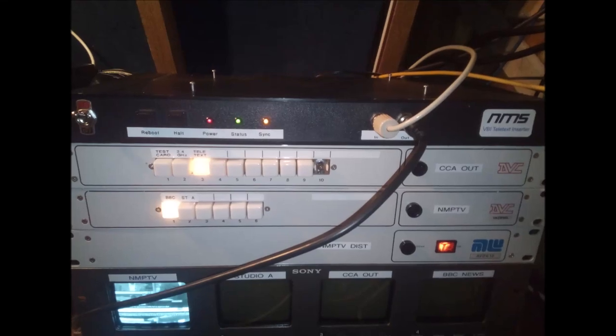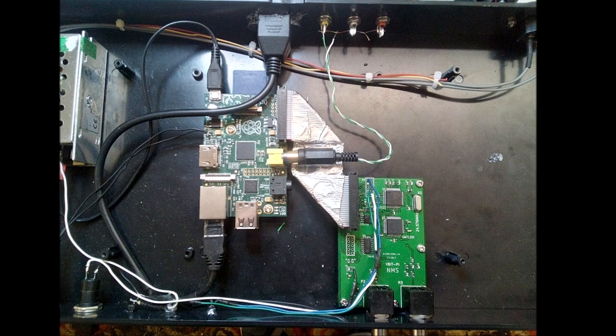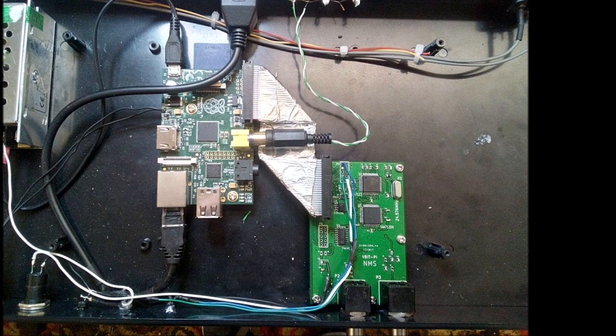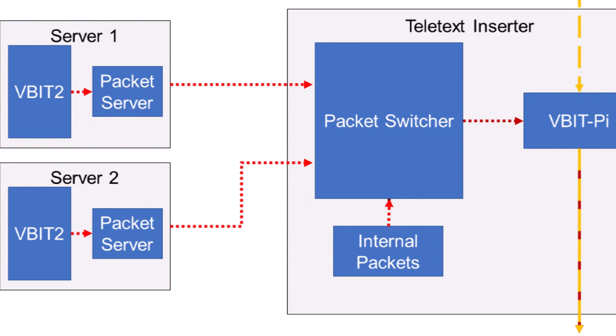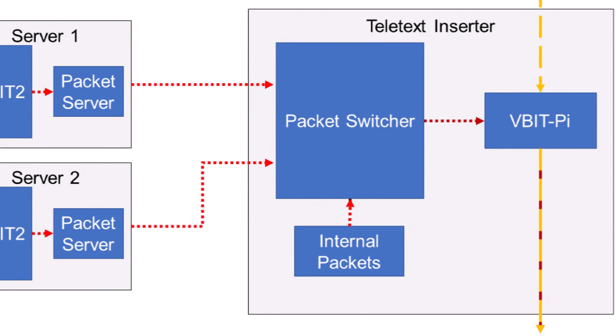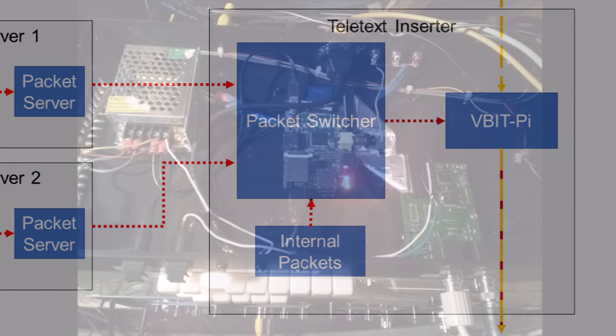This is my home-built Teletext Inserter. It uses a Raspberry Pi connected to a VBitPi board to add a Teletext data stream to pretty much any video signal. Two other Raspberry Pis used as servers provide the Inserter with a data stream. It can switch between them and an internally generated page so that if either of them stop working, there's still a Teletext service going out. Apart from the VBitPi, it uses off-the-shelf components that can easily be found on eBay or Farnell.